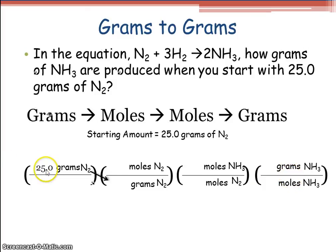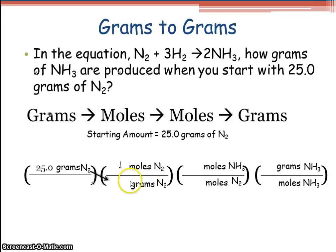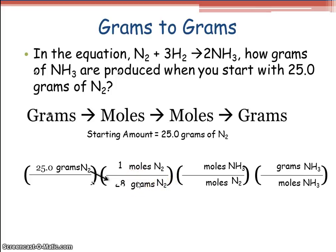Put down your starting amount, which is 25.0 grams of N₂. Whenever you want to compare moles to grams, look at the periodic table. For every one mole, how many grams of N₂ do I have? Nitrogen is 14, but since I have N₂ I have to double that, so 28.